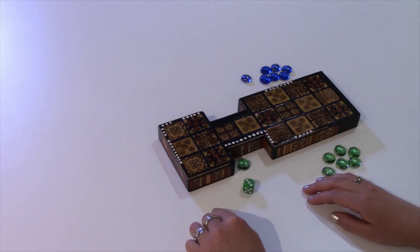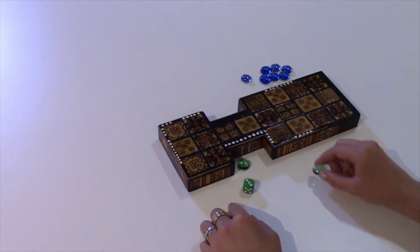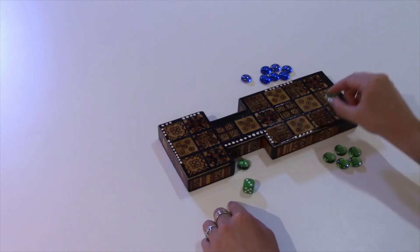If your roll lands on a 1, 2, 3, or 4, you can move your first piece that many squares. So I rolled a 3, so I'll move 1, 2, 3.